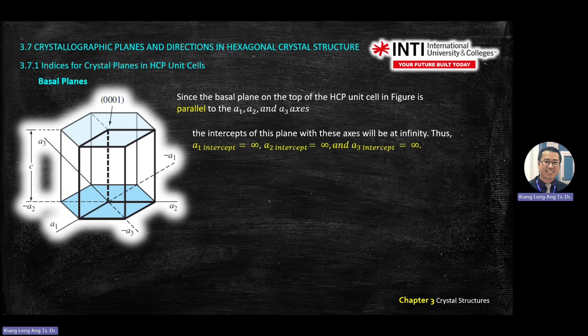This is the plane. So if you have — for example this plane, the bottom one — bracket means plane. The bottom one will be 0, 0, 0, 0. So you have HKIL. On the top here, because it moves up one unit, you have 0, 0, 0, 1.